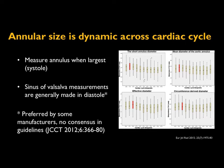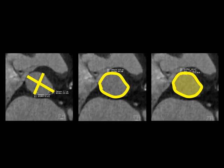Even though systole is technically the widest, there's not a huge difference between systole and diastole if you have to use diastole in a pinch. For the sinuses of Valsalva, timing is more a matter of personal preference — some manufacturers prefer diastole. At Hopkins, we use systolic measurements for the annulus and diastolic measurements for the sinuses. We provide maximum and minimum diameters of the annulus as well as perimeter and area measurements, which are used to decide on valve size.